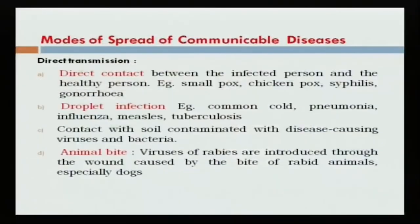Non-communicable disease is restricted to the particular individual who is suffering from that disease. Now we will take care of the mode of spread of communicable disease. Corona is an air-borne disease — the virus spreads in the air. Here we are talking about direct transmission: direct contact between the infected person and the healthy person. Examples include smallpox, chickenpox, syphilis and gonorrhea. Modes include direct contact, droplet infection, contact with contaminated surfaces, and animal bite.